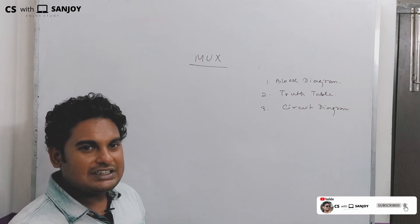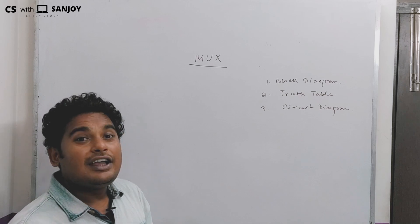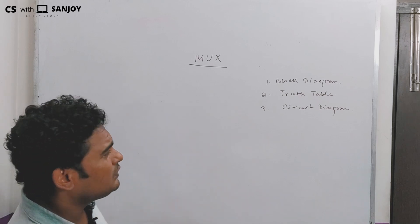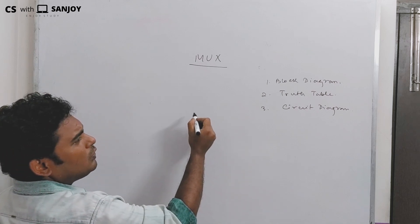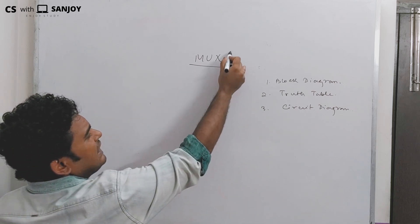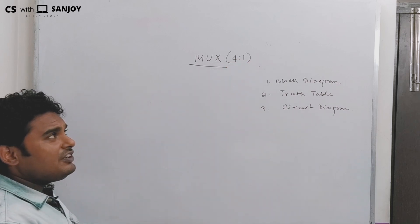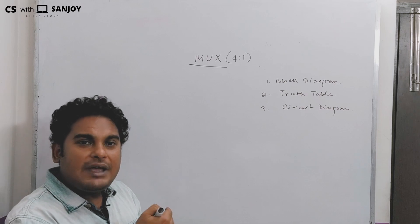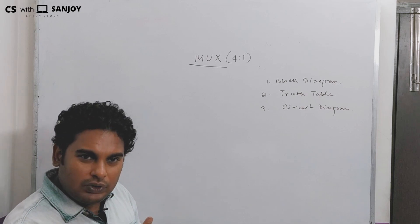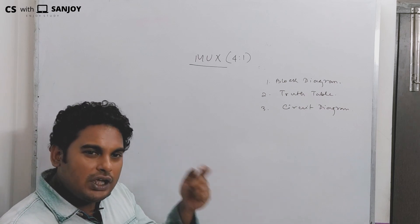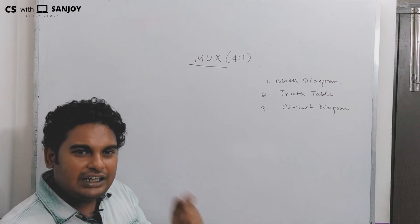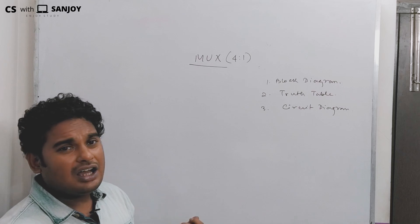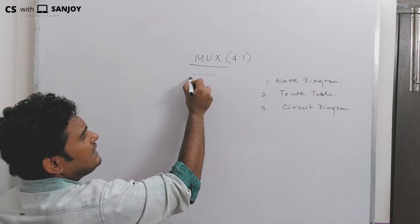We will also look at multiplexer functional completeness, implementation using a map, and implementation table. You should look at the series of videos and do hands-on practical work — it is very easy. Let's look at the 4-to-1 MUX block diagram.